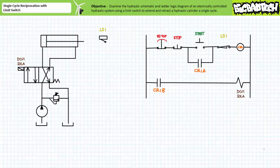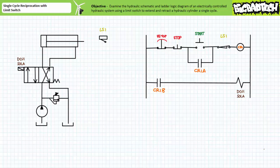When the solenoid DCV1 Sol A is energized, this valve will shift to the straight-through position where pump flow is routed to A and tank to B. Actuator ports A and B are respectively connected to the cap and rod end of a double-acting cylinder. When the solenoid is de-energized, the cross-connect position allows pressurized flow to enter the rod end and the cap end will exhaust to tank — therefore the cylinder will retract. When the solenoid is energized, the straight-through position allows pressurized flow to enter the cap end and the rod end will exhaust to tank — therefore the cylinder will extend.